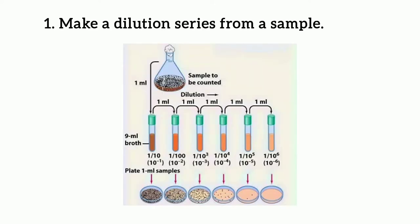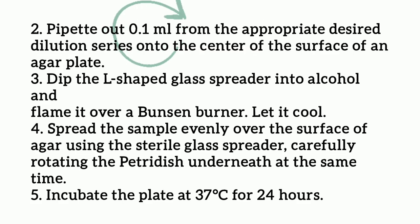Let's go through the general steps. First and foremost, we are going to make a dilution of the sample — we do not use the original sample as is. We first dilute the sample, then select a particular dilution to proceed with. From that dilution, we pipette out 0.1 ml onto the center of the surface of an agar plate.